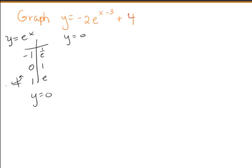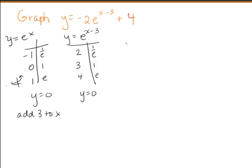The first step, I'm going to go in order of operations, is e to the x minus 3. That's going to make me add 3 to the x values. So negative 1 plus 3, 0 plus 3, 1 plus 3. Don't change my y values. My asymptote's a y, so I don't change that.